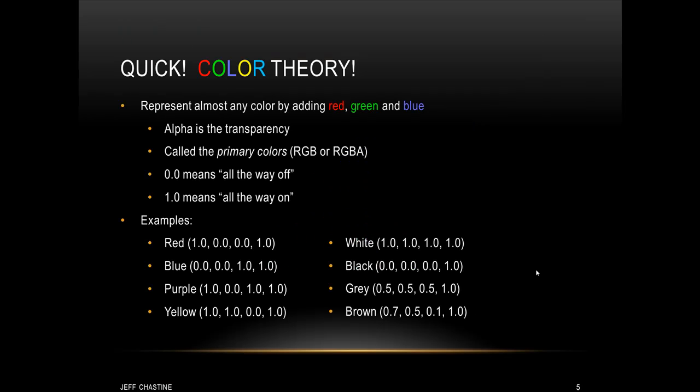In this example, we're going to manually color the vertices. Realize that this is not normally how it's done — you typically would use light positions and light directions and then calculate how much light is actually hitting the vertex. But in this case, let's go over some basic color theory.